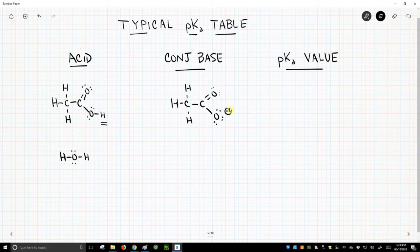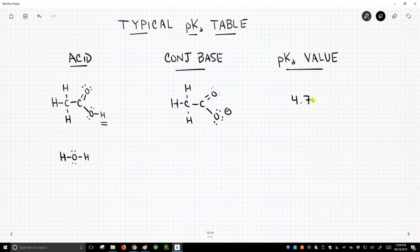That'll be an anion, so we've lost the proton off the oxygen, and the pKa value will normally be listed on the far right. In this case, it's about 4.7. The number of sig figs for these is going to vary, but two sig figs is pretty common.